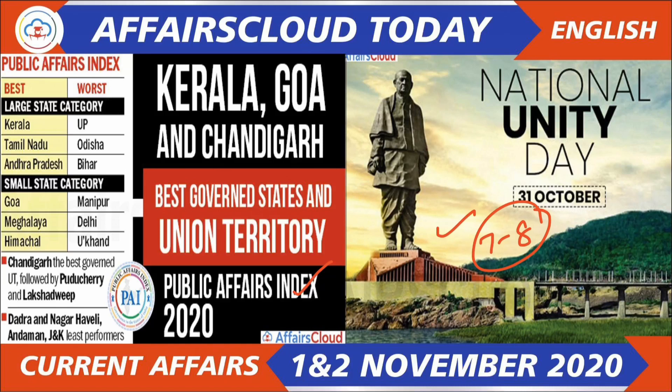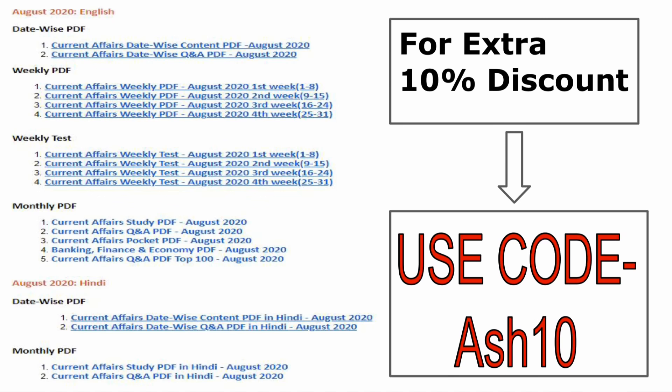Before that, I want to discuss one or two things with you. One is the AffairsCloud subscription — you can buy it with two methods. You can visit our website at AffairsCloud slash Current Affairs, or you can directly visit the description box below this video to find the subscription link. In the subscription, you will get daily PDFs, weekly PDFs, weekly tests, and monthly PDFs.